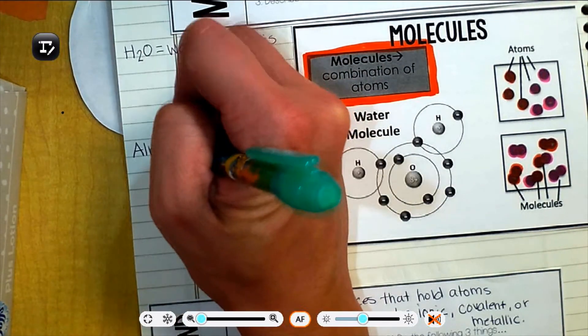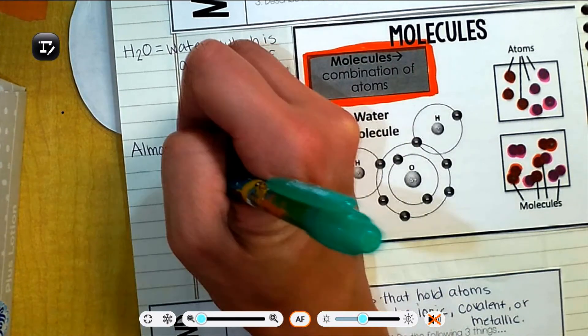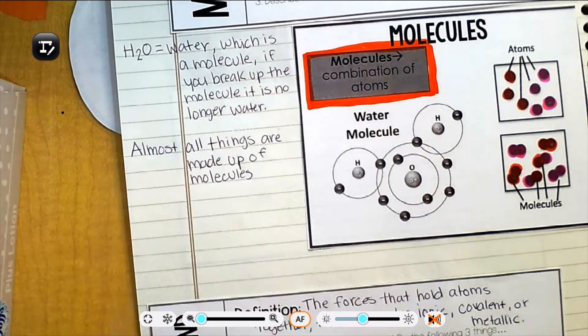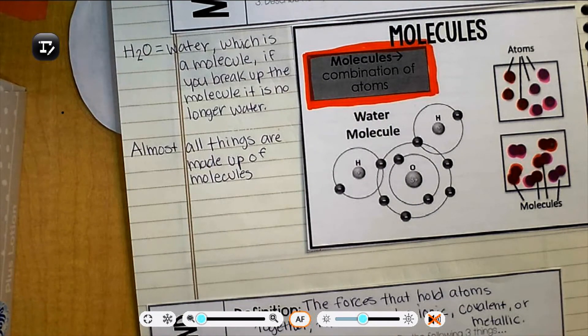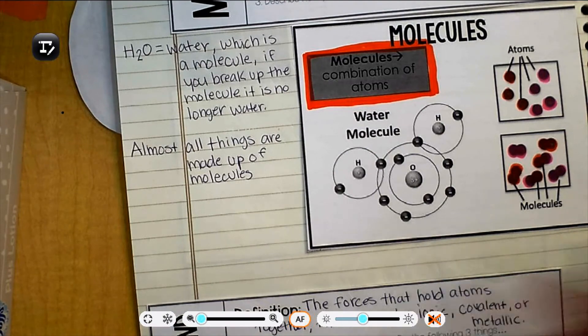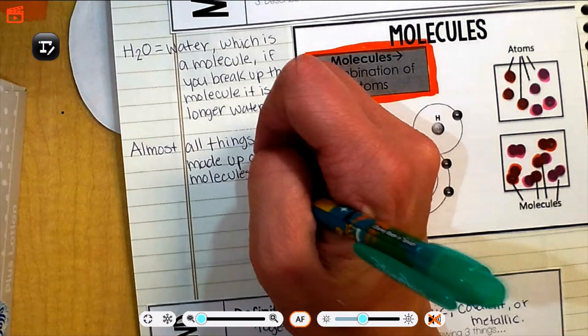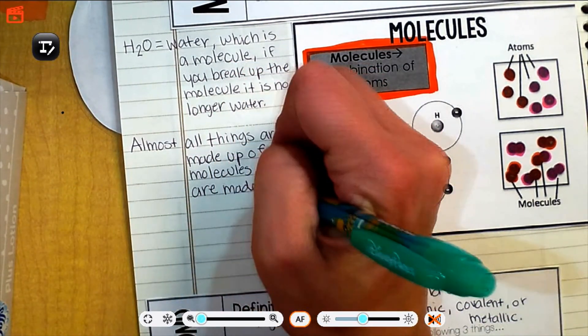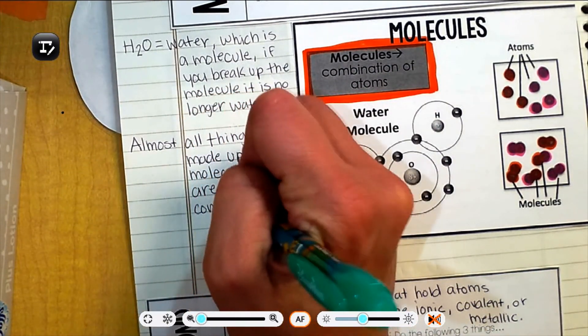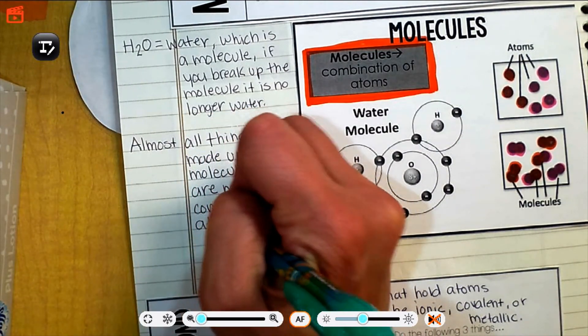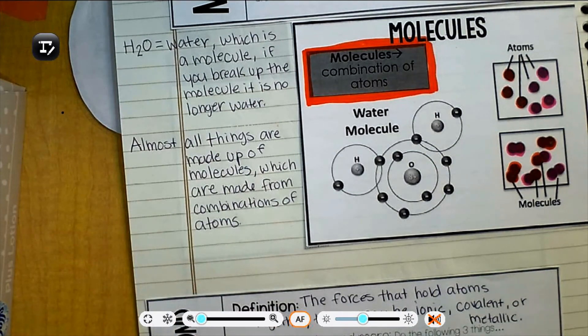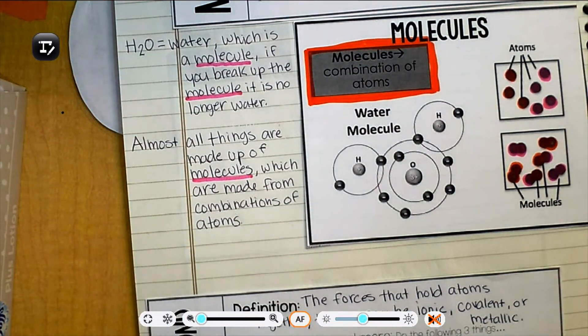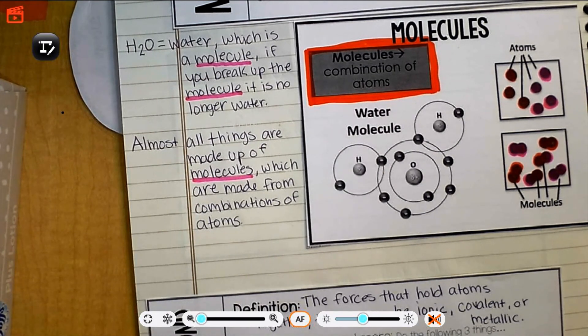Another fact. Almost all things are made up of molecules. Most things aren't just a single atom or an atom by themselves or stuff like that. Even like oxygen in the air isn't just oxygen by itself, it's O2, it's a molecule of oxygen. And I want you to go through with your highlighter or a pen and underline any time you see the word molecule. When you're done with page 9, you can go on to page 10.